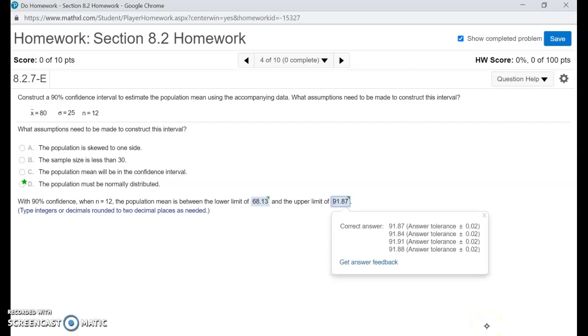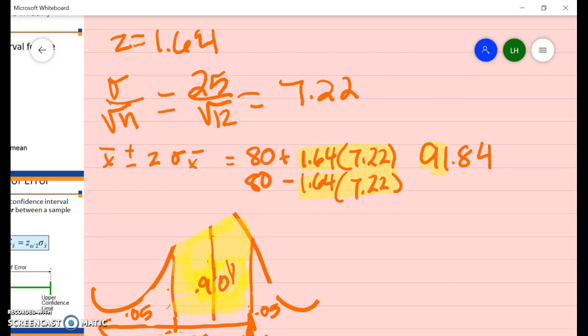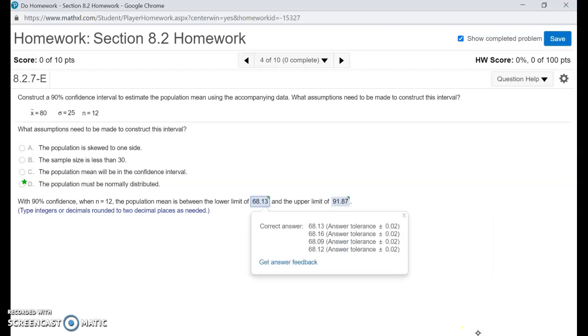Okay. And that is an acceptable answer. And then I'm going to do 80 minus 1.64 times 7.22. And I'm going to get 68.16. And that is an acceptable answer.